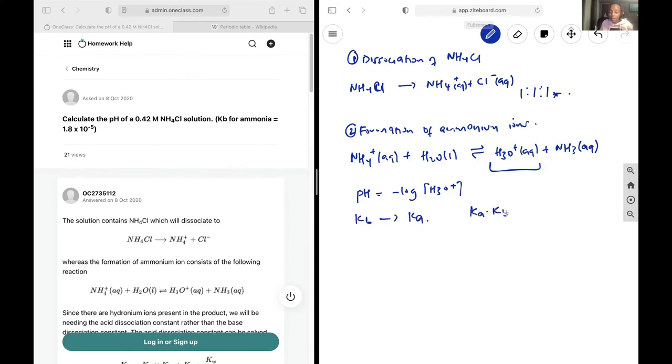We know Ka times Kb is equal to Kw, and so Ka will simply be equal to Kw over Kb. Kw is 1.0 times 10 to the negative 14 over the Kb that we're given, which is going to be 1.8 times 10 to the negative 5. So our Ka is going to be 5.56 times 10 to the negative 10.